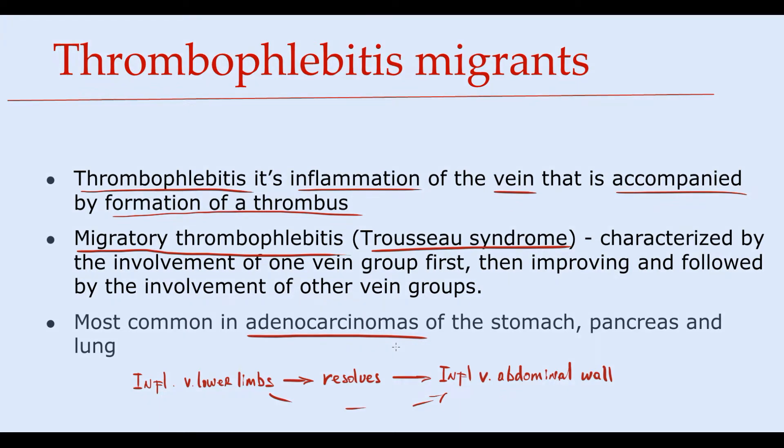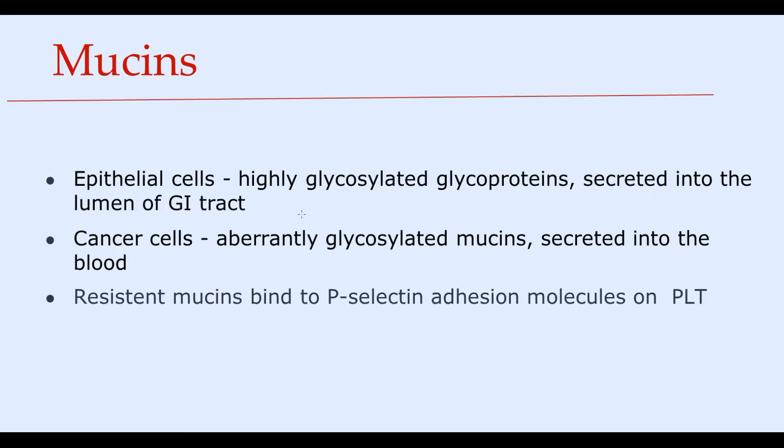And the reason is that adenocarcinomas are tumors able to secrete into the blood various biologically active substances. One of them are mucins. Mucins are highly glycosylated glycoproteins that are typically secreted by epithelial cells into the lumen of the gastrointestinal tract.